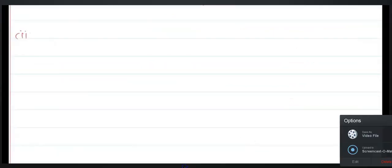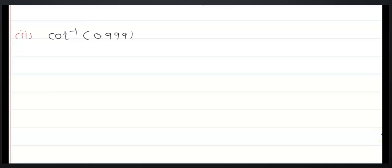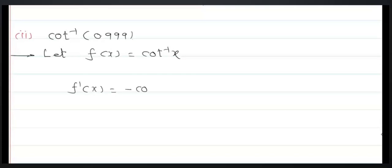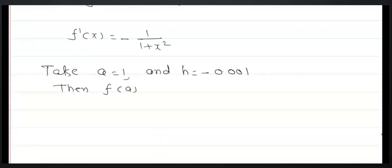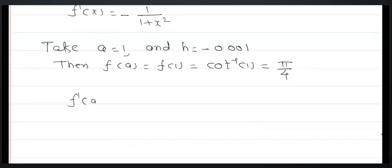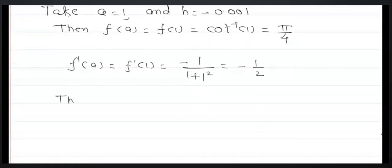Next question: Find the approximate value of cot⁻¹(0.999). Here f(x) = cot⁻¹(x), and the derivative is f'(x) = -1/(1+x²). Again a = 1, h = -0.001. Then f(1) = cot⁻¹(1) = π/4, and f'(1) = -1/(1+1²) = -1/2.